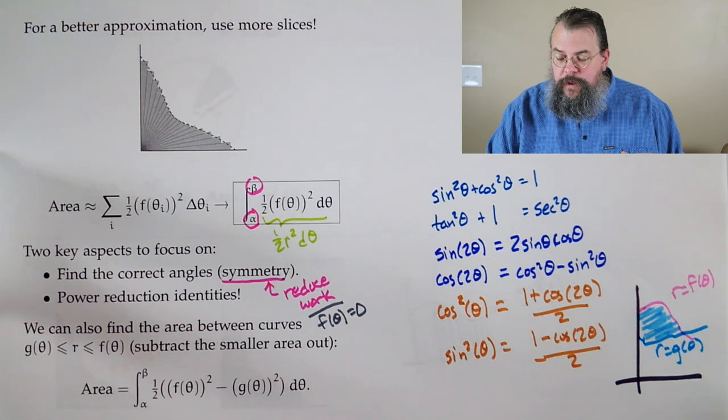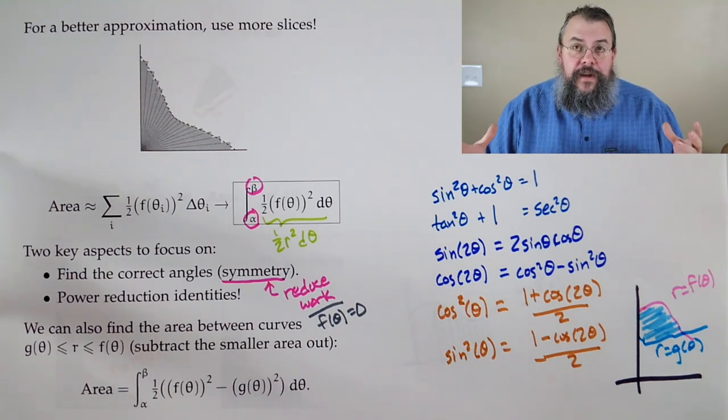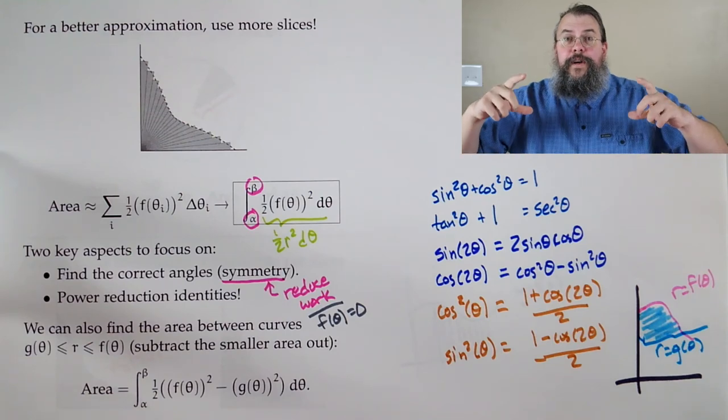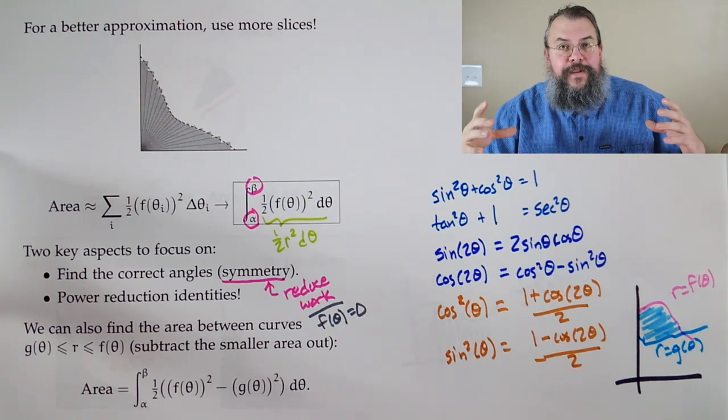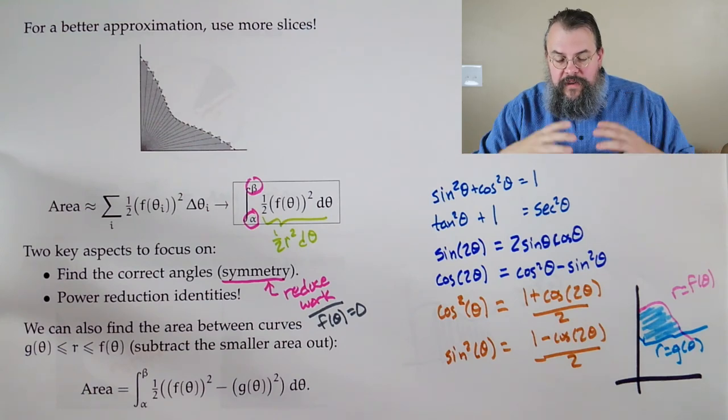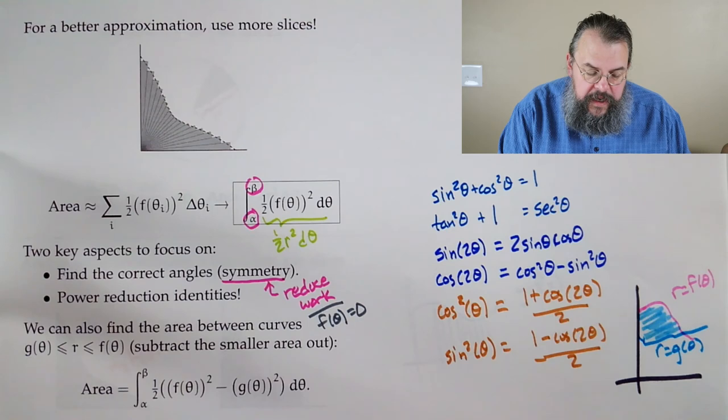So, if you go back to things such as the washer method, where you say, look, you have the big circle minus the little circle. Well, that's the same philosophy. We're going to take the big minus the little. And so, what you're going to have is you're going to have the angles. Now, how do you find the angles?